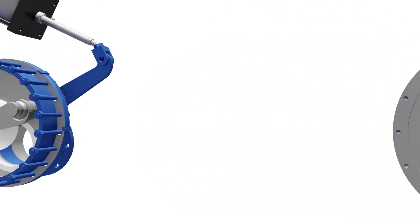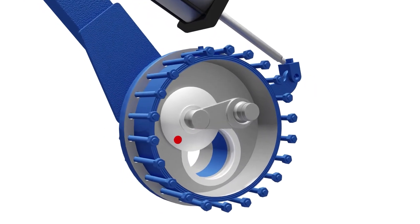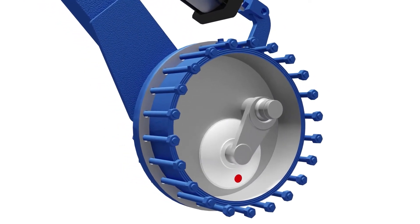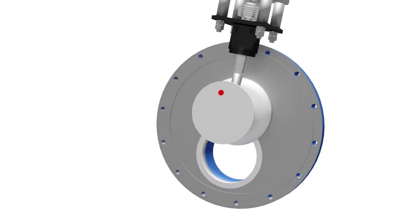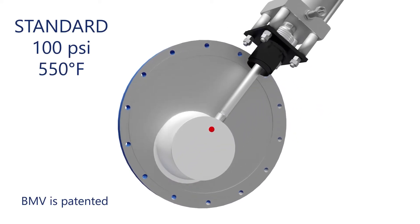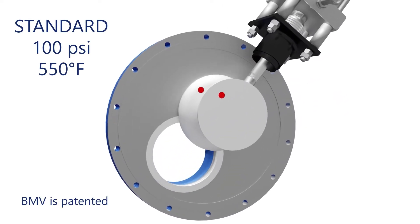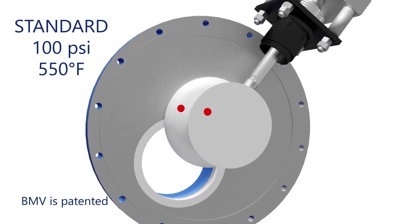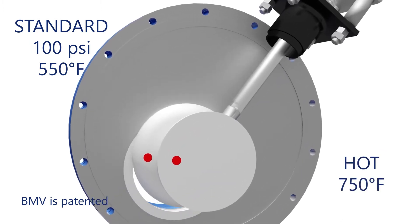The ProValve is for use in both slurries and dry solids where an ANSI class valve is needed. The Bulk Material Valve, or BMV, handles dry solids up to 100 psi and 550 degrees Fahrenheit in its standard design, and up to 750 degrees Fahrenheit in the hot design configuration.